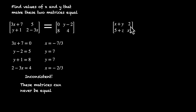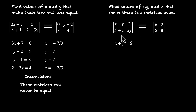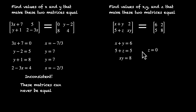Let's try one more. We have the matrix with elements x plus y, 2, 5 plus z, and xy — this is a 2 by 2 matrix — equal to the matrix with elements 6, 2, 5, and 8. We have to find values of x, y, and z. Setting corresponding elements equal: x plus y equals 6, and 2 equals 2, which is always true. Then 5 plus z equals 5, so z equals 0. And xy equals 8. We know the sum of x and y is 6 and the product is 8, so we can use a quadratic.